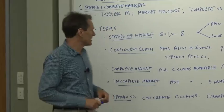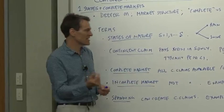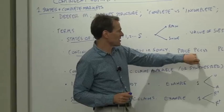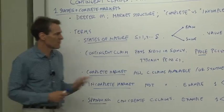Contingent claims - a very special kind of asset. It's a contingent claim and it pays one unit in one state and nothing in any other state. And it has a contingent claims price, which I call PC for contingent claim. PC of S tells us the price in any state S.